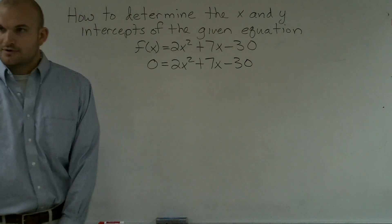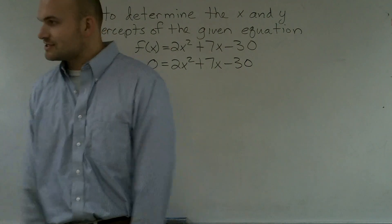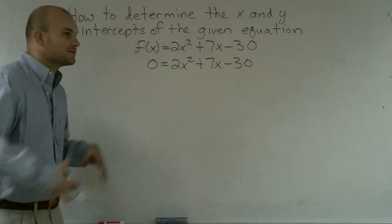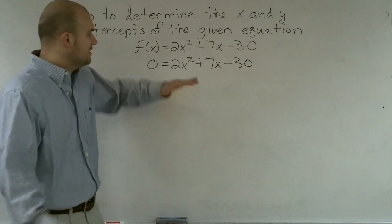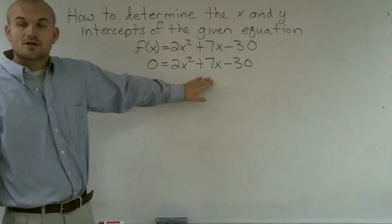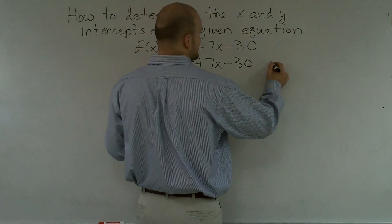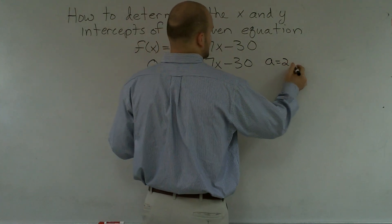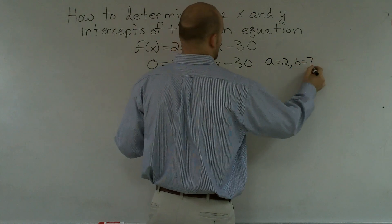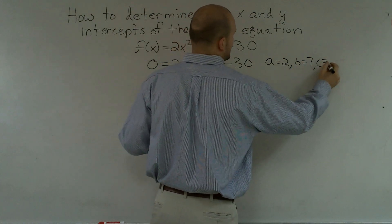So we need to essentially factor this, or we need to find the roots of this equation, or we need to find the solutions of this equation, or we need to find the x-intercepts. Whichever way it might be presented in your book, here's your equation. You need to find the values for x. So the first thing we always need to do is, I always like to look at my a, b, and c. a equals 2, b equals 7, c equals negative 30.